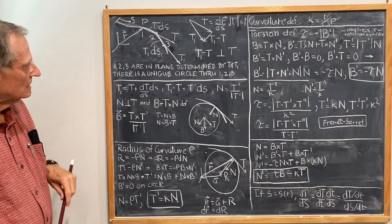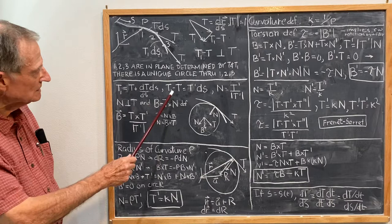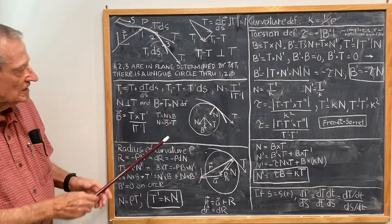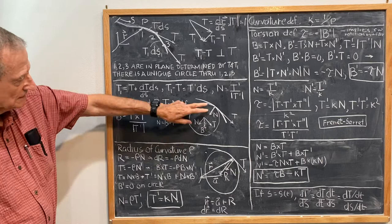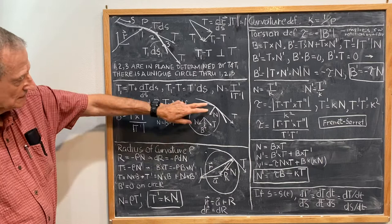Now, I can write T1 as T plus dT/dS times dS, so that T1 minus T is equal to T prime times dS. T1 minus T is perpendicular to T, so I can define the unit vector N as T prime over the magnitude of T prime, and that is perpendicular to the curve and in the plane through the three points, which determines the osculating circle.